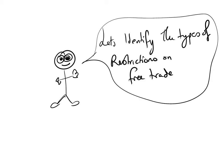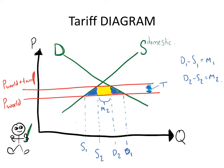Let's identify the types of restrictions on free trade. As you can see, we have a tariff diagram. It's a simple micro — same as the micro demand-supply diagram, but with a few alterations. One being supply is domestic supply, not normal supply. PWOLD represents the price of the good, and PWOLD plus tariff is the price of the good with the tariff added to it. Now, as you can see on the graph, supply and demand S1D1 has been restricted and moved to S2D2 because of the tariff. You see two triangles. These are deadweight welfare loss triangles and cannot be allocated to anyone.